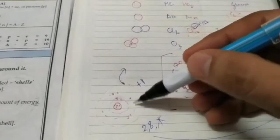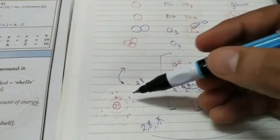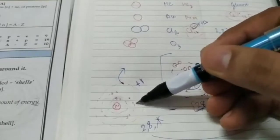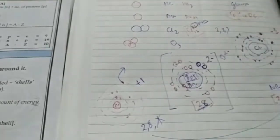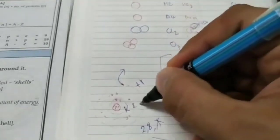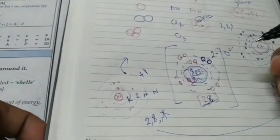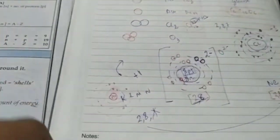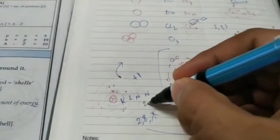Now, these orbits are also called energy shells because the electrons in each shell has a fixed amount of energy and they are labeled as K, starting with K, L, M, N, and so on. And the number of electrons each can accommodate is given by the formula 2N squared.